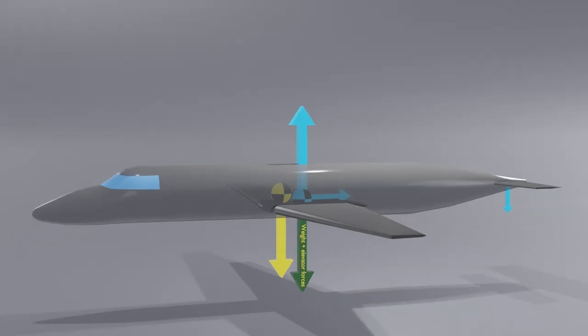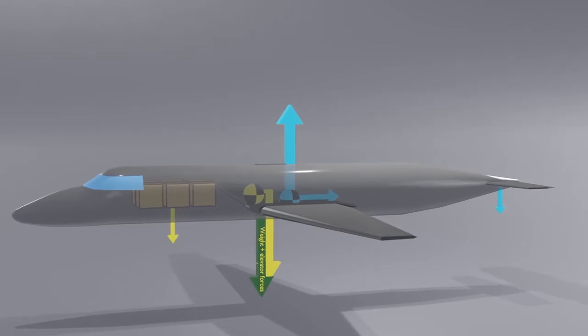Let's start loading the payload at the front. Which way will the C of G move? And how do we compensate? The elevator needs to push down harder.